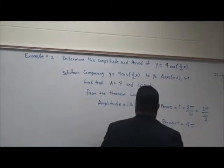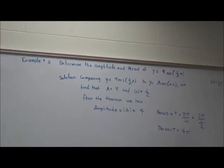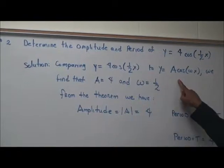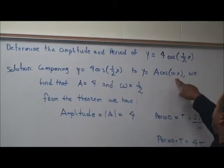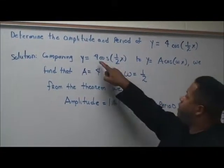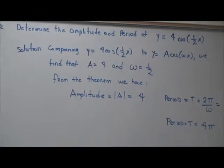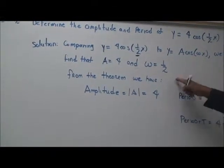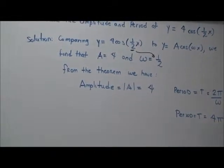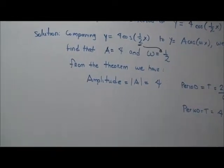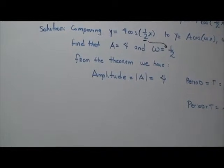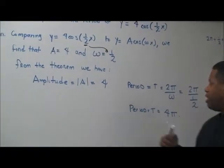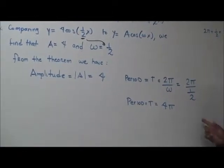Example 2: we want to determine the amplitude and period of y equals 4 times the cosine of one-half x. We compare that to y equals A times cosine of omega x. Here, the numerical value 4 is considered as A, the amplitude, and the omega value is one-half. We put this into the formula: the amplitude is equal to 4, and the period, after a little bit of math, is going to be 4 pi for this problem.